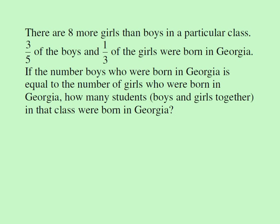There are eight more girls than boys in a particular class. Three-fifths of the boys and one-third of the girls were born in Georgia. If the number of boys who were born in Georgia is equal to the number of girls who were born in Georgia, how many students — boys and girls together in that class — were born in Georgia? This is a typical Singapore-style problem.